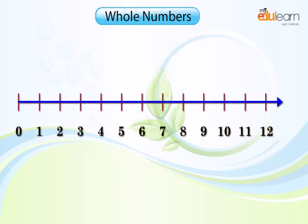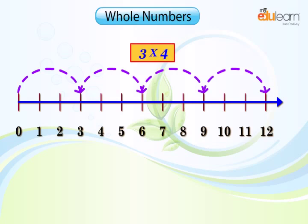We now see the multiplication of whole numbers on the number line. Let us find 3 into 4. We will reach 12. So, we say 3 into 4 is equal to 12.